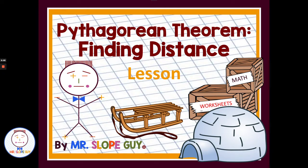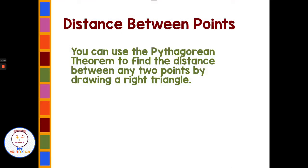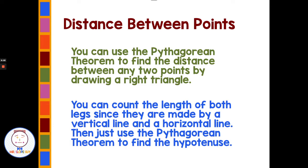Hello, everyone. Today we are going to use the Pythagorean Theorem to find the distance between two points. You can use the Pythagorean Theorem to find the distance between any two points by drawing a right triangle. You can count the length of both legs since they're made by a vertical line and a horizontal line, then use the Pythagorean Theorem to find the hypotenuse.